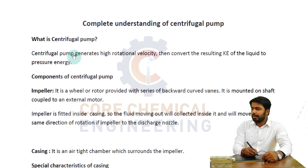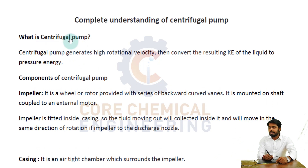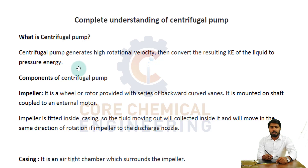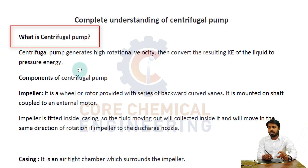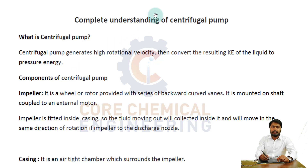So here is a centrifugal pump. What is a centrifugal pump? A centrifugal pump generates high rotational velocity, then converts the resulting kinetic energy of the liquid to pressure energy. Centrifugal pump basically generates high rotational velocity by the action of the impeller, and that high rotational velocity helps increase the pressure and kinetic energy of the fluid.